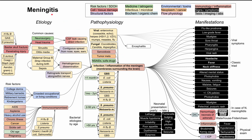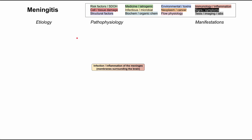This is a mechanism of disease map for meningitis, or the infection and inflammation of the meninges — the membranes surrounding the brain. I'll be talking about the etiology of meningitis as well as the pathophysiology and the manifestations of this disease. Each of the boxes are color-coded according to the legend, and I'll be clearing all of the boxes and talking through them one by one. Let's start with the central pathophysiology of meningitis.